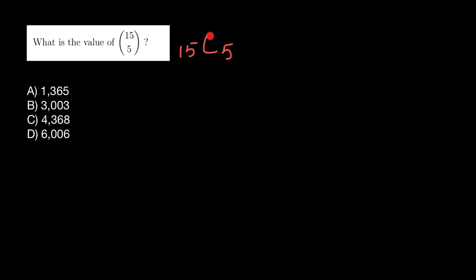C and not P here. P stands for permutations where order does matter, and C stands for combinations where order doesn't matter.